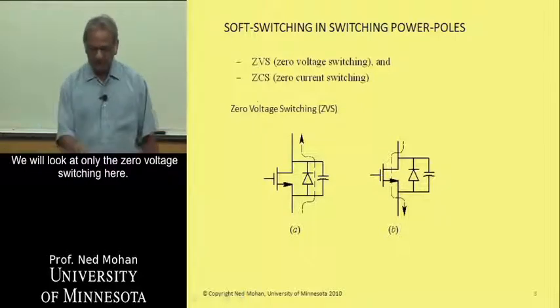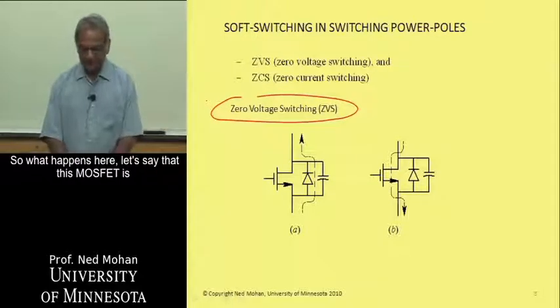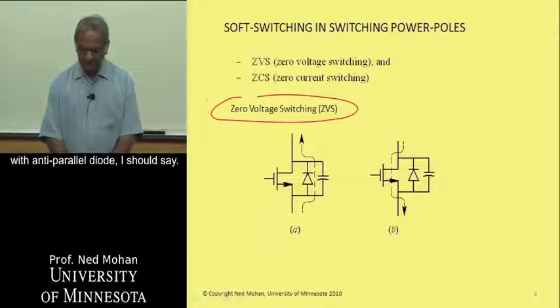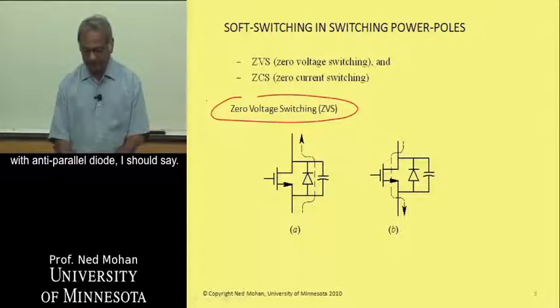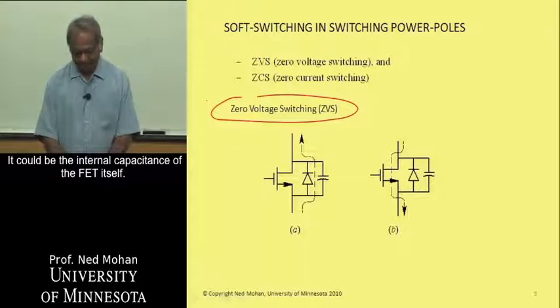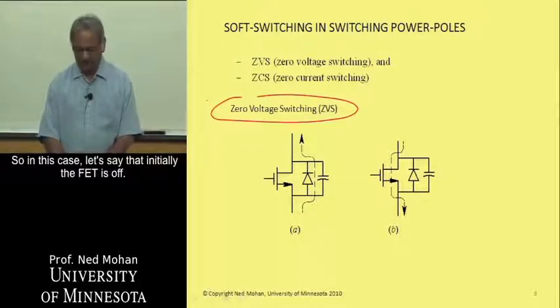We will look at only the zero voltage switching here. So what happens is this MOSFET is shown explicitly by its reverse conducting diode, this anti-parallel diode, and we will put a capacitor. It could be the internal capacitance of the FET itself, but we may end up adding an external capacitor here.